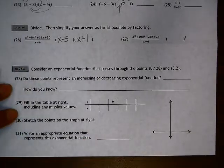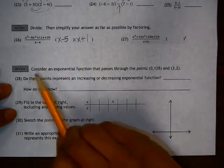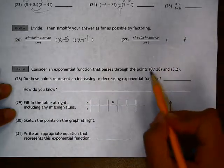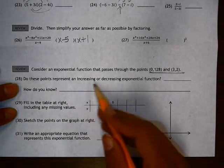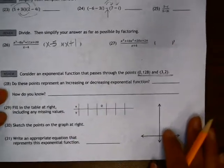Alright, let's look at 28 through 31. We have an exponential function that passes through the following points. The first question is asking, do these points represent an increasing or a decreasing exponential function?